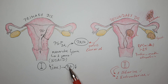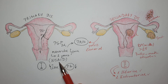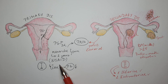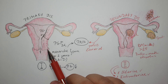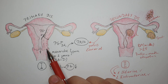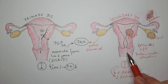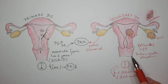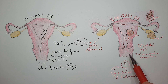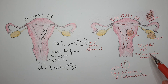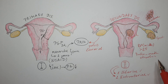For primary dysmenorrhea, therapy can be with NSAIDs alone, and sometimes a psychosomatic cause is involved, in which case psychiatric support can help. For secondary dysmenorrhea, if it is caused by an underlying condition, we obviously need to eliminate that underlying condition in order to get rid of the secondary dysmenorrhea. Thank you very much.